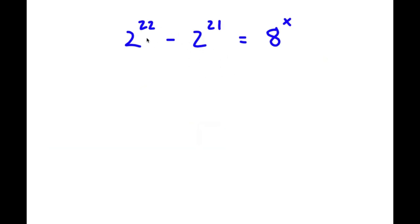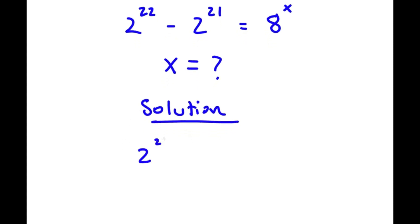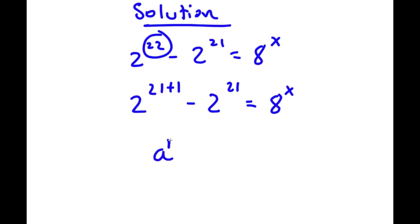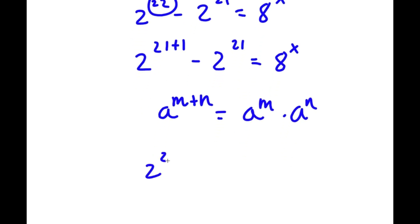In this problem, I have 2 to the power of 22 minus 2 to the power of 21 is equal to 8 to the power of x. This problem looks complicated, but it's easier than you might think. I'm solving for x. I rewrite the exponent 22 as 21 plus 1, so I have 2 to the power of (21 plus 1) minus 2 to the power of 21 equals 8 to the power of x. Using the product rule, 2^(21+1) equals 2^21 times 2^1, giving 2^21 times 2^1 minus 2^21 equals 8^x.